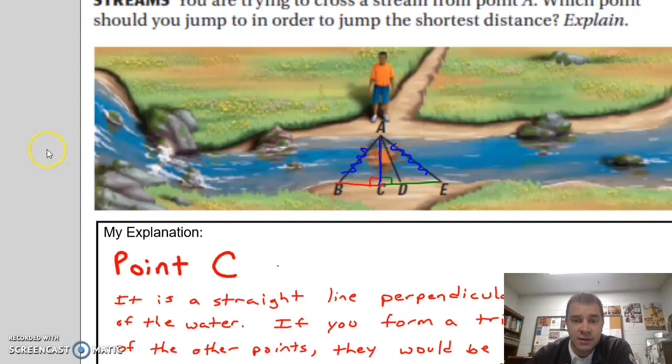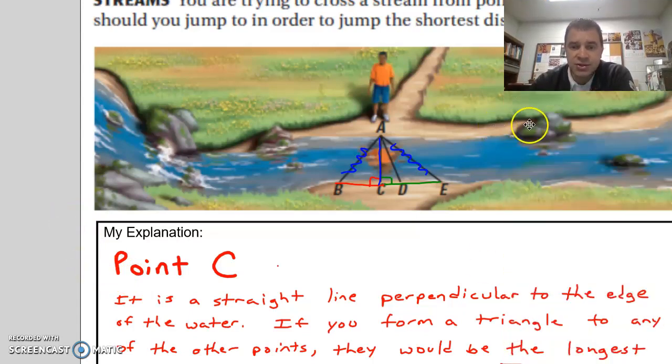Here's what I've got as a solution. You really should be going to point C if you want to make sure you get across the stream without getting your feet wet. That is the shortest distance. I've reasoned it like this: it is the straight perpendicular to the edge of the water. It's a straight line.